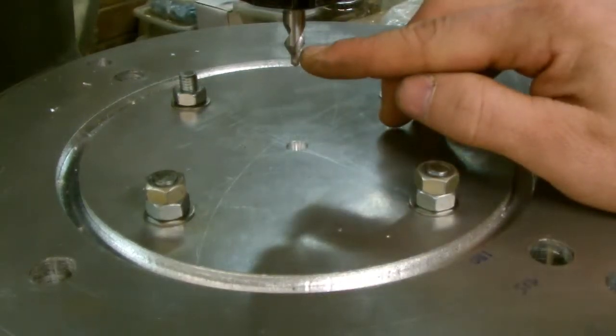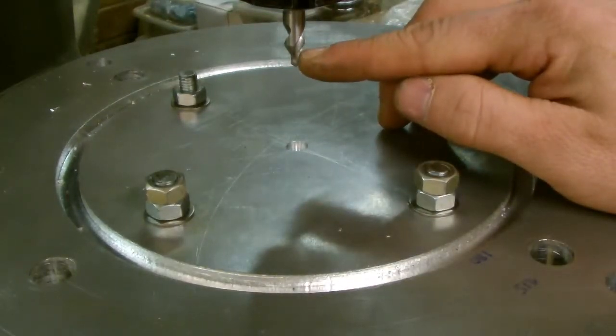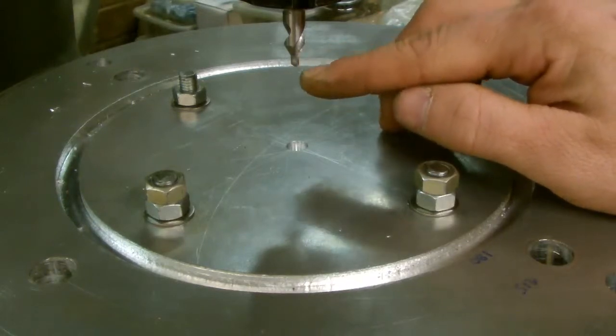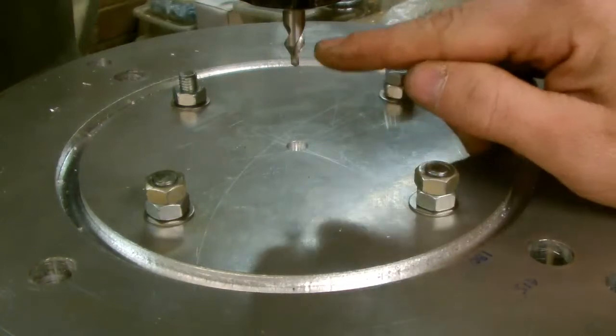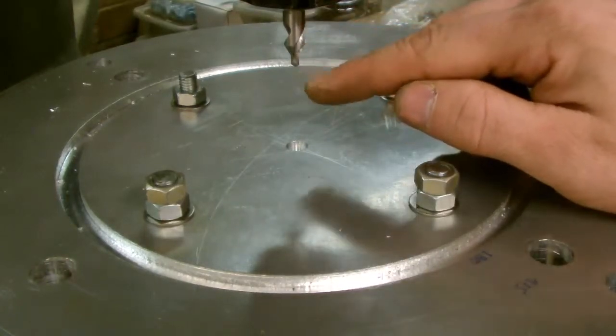And that would help then locate the normal twist drills, which have a point on them, to locate quite accurately. I'm going to use the center drill in a slightly different fashion.